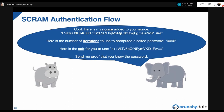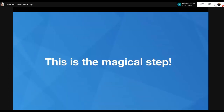Postgres sends back the number of iterations used to compute the salted password as well as the salt, so Gray Hippo knows how to compute the salted password. Postgres then asks Gray Hippo to send a proof that Gray Hippo knows the password — this is part of the secure transmission to verify that each party knows the credential.